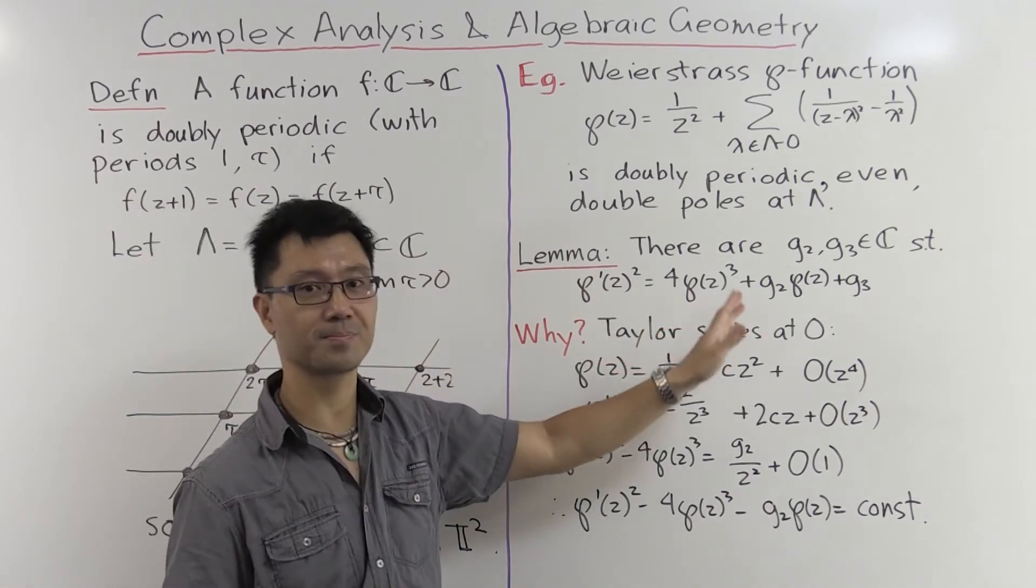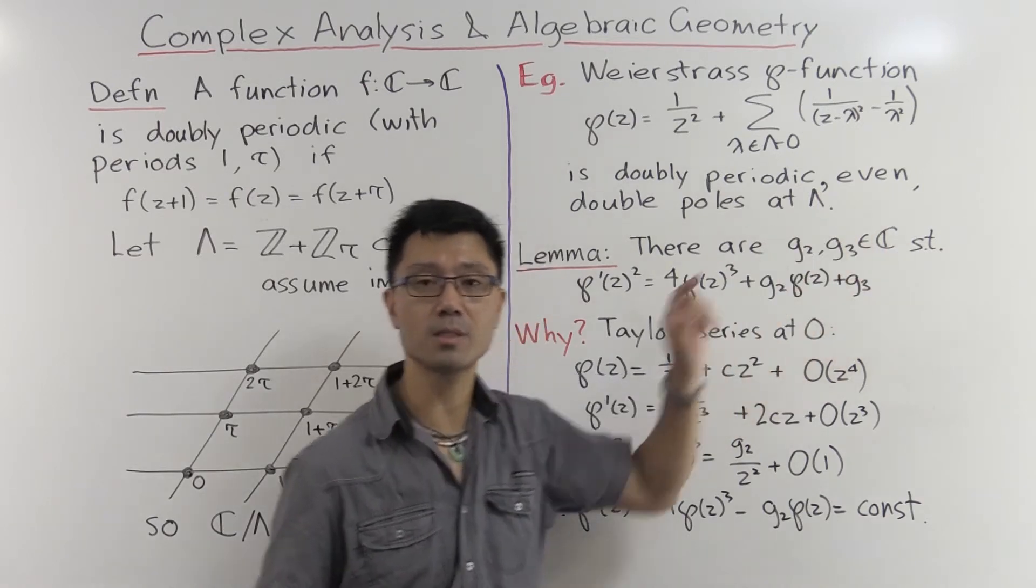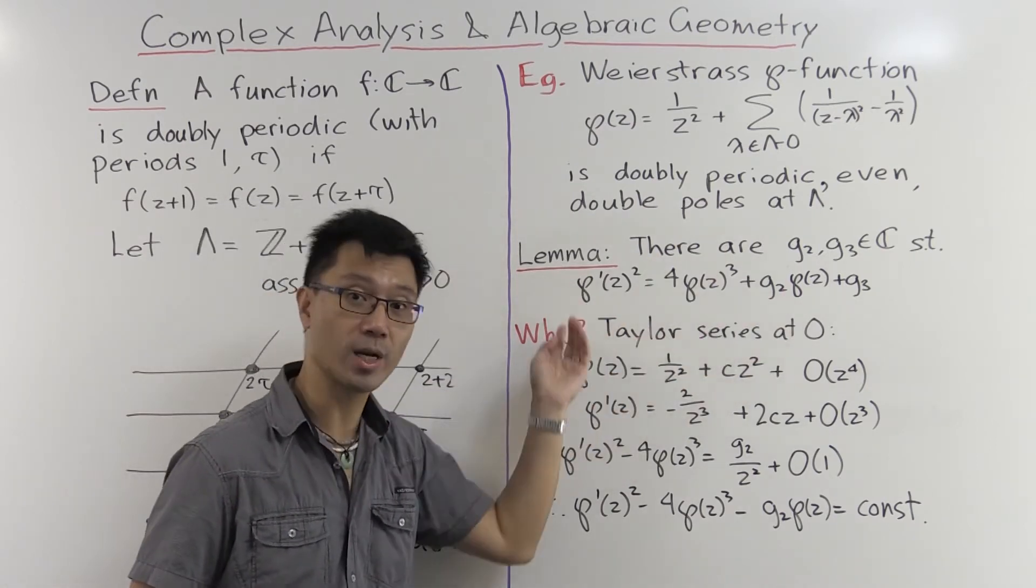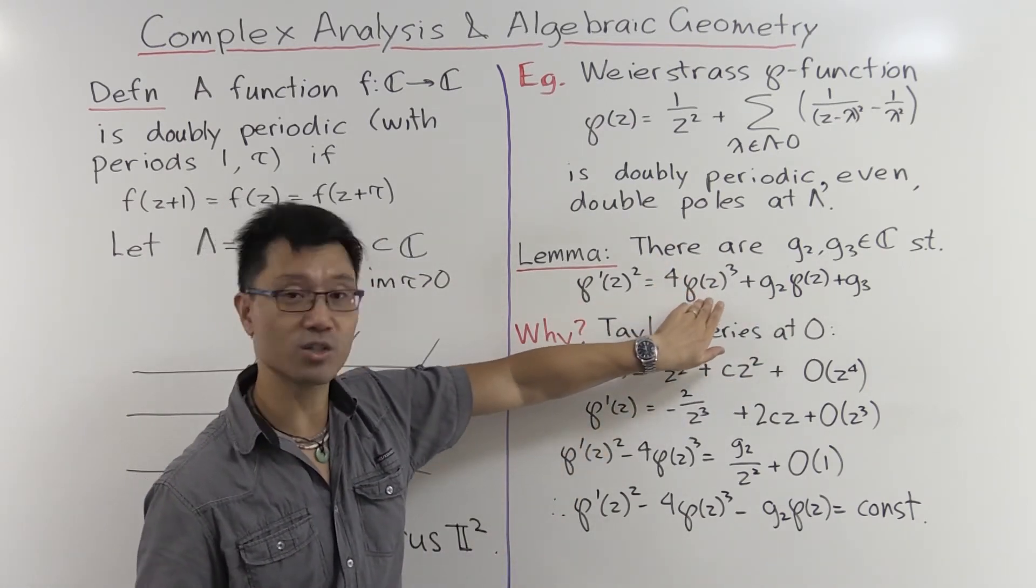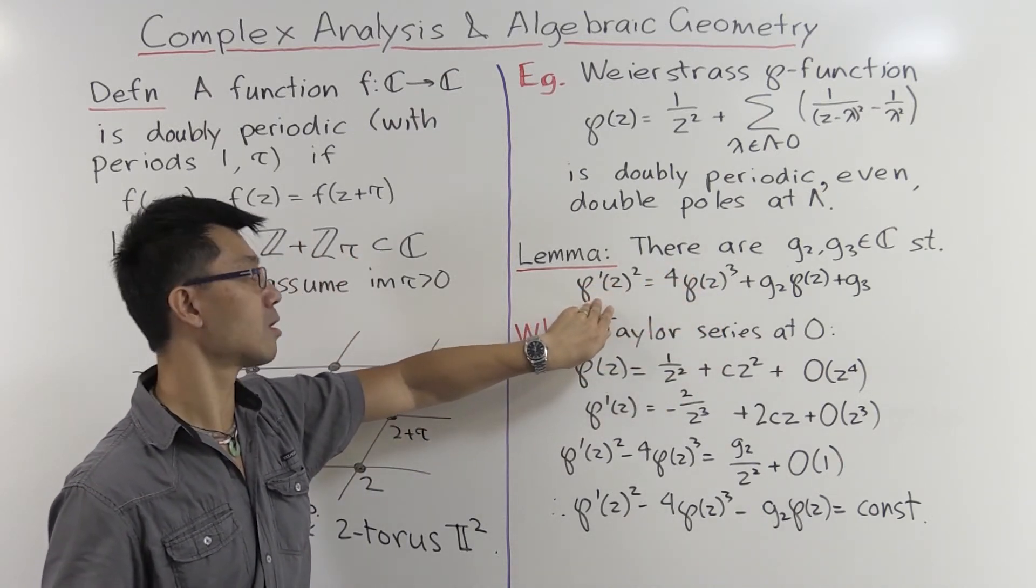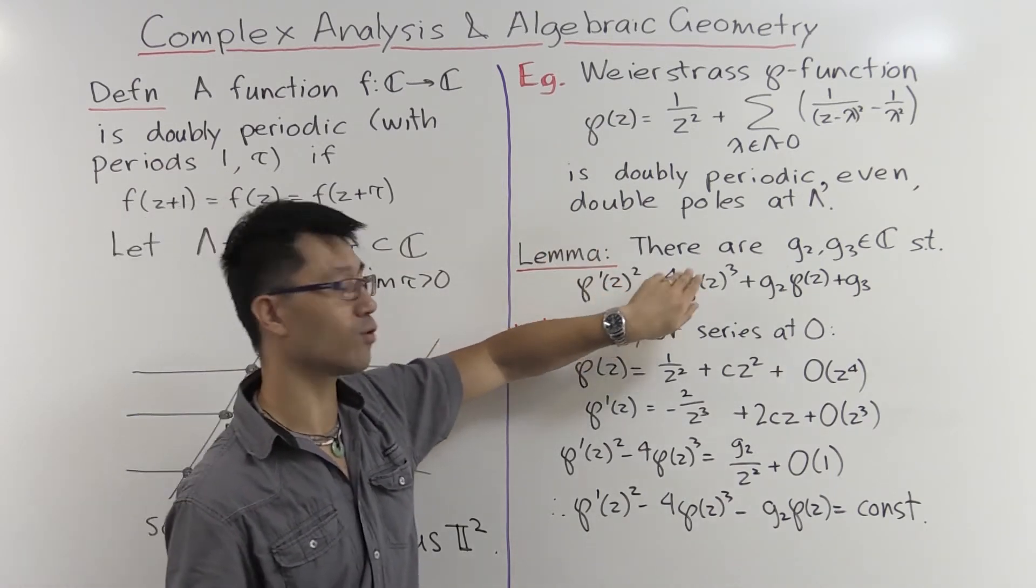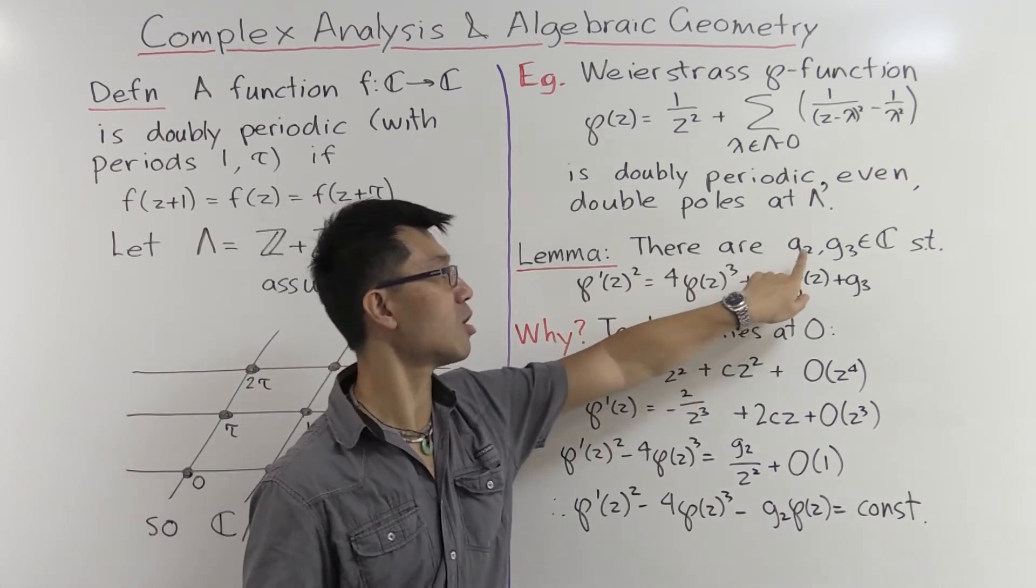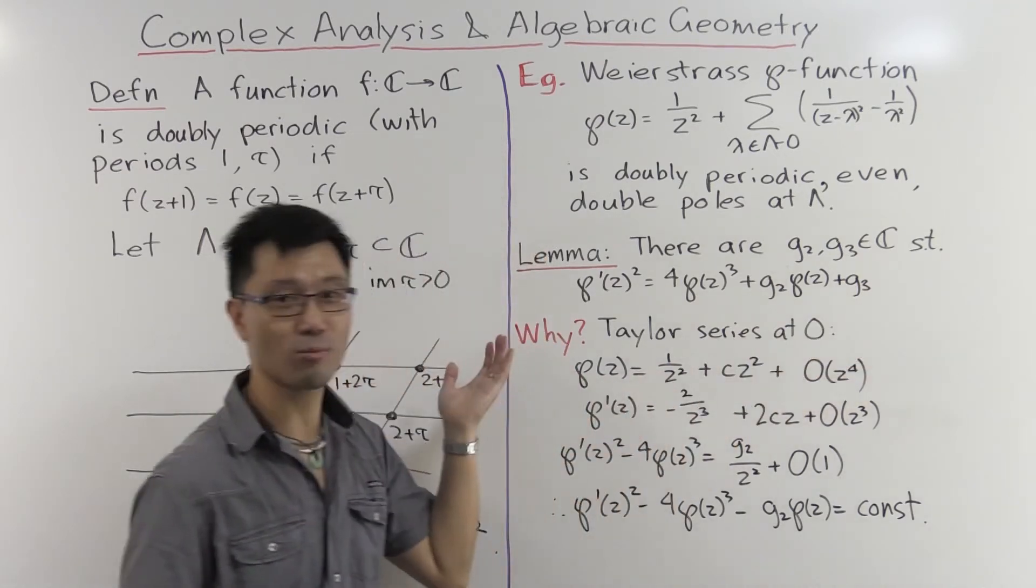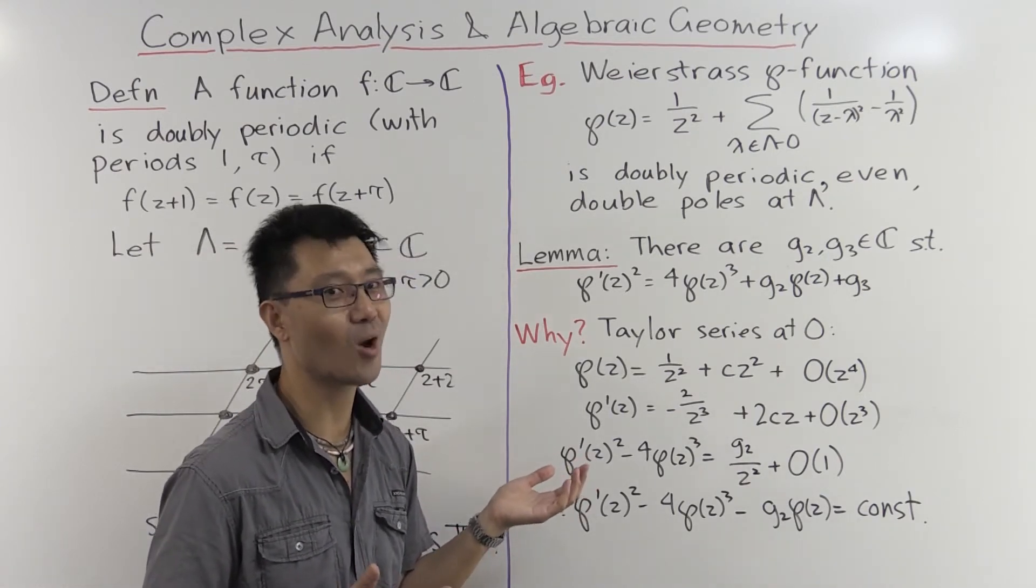So how is this Weierstrass ℘ function related to algebraic geometry, where the objects of study are polynomial equations and their solution? Well the answer to that question lies in this rather interesting lemma here. It states the following: You can find constants g₂ and g₃, so they're going to be complex numbers, which give you the following polynomial relationship between the Weierstrass ℘ function ℘(z) and also its derivative. So more precisely, it states that the square of the derivative is equal to 4 times the cube of ℘(z), plus this constant g₂ times ℘(z), plus this constant g₃. So this is a rather wonderful fact.